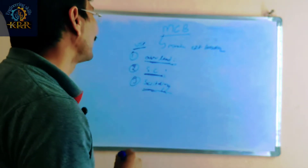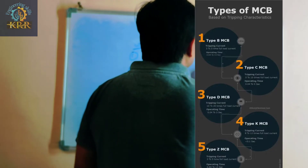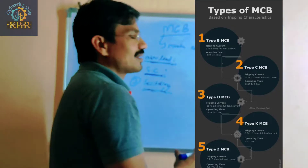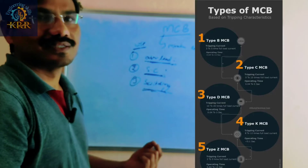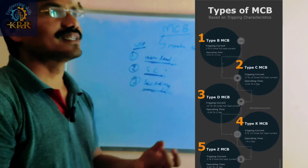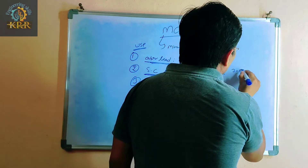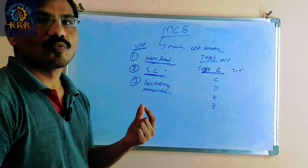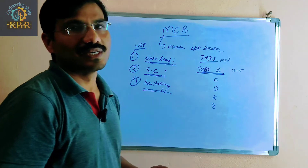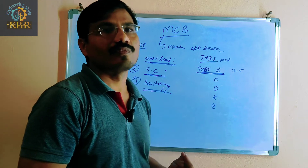Now let's look at the types of MCBs available in the market. Type B MCBs have a minimum tripping current of 3 to 5 times their rated current. Type B MCBs are used for lighting circuits and small inductive loads.